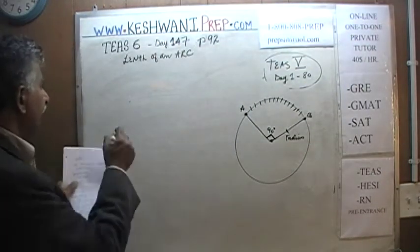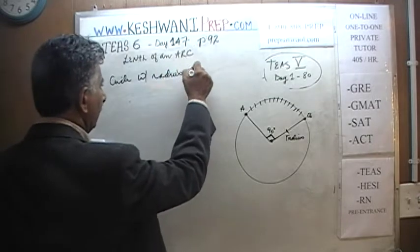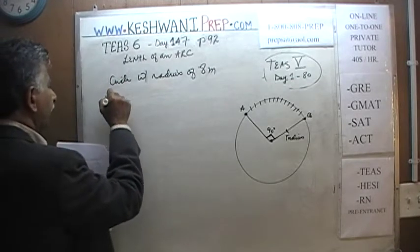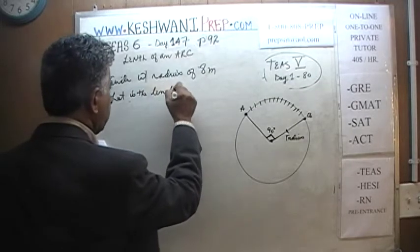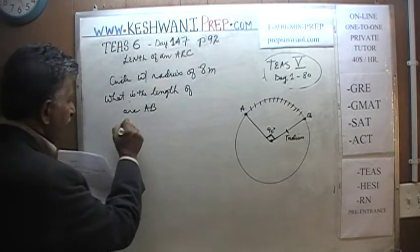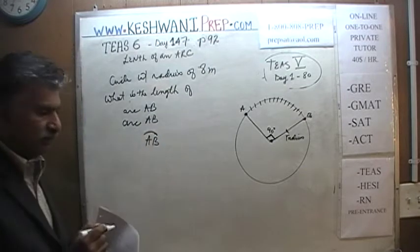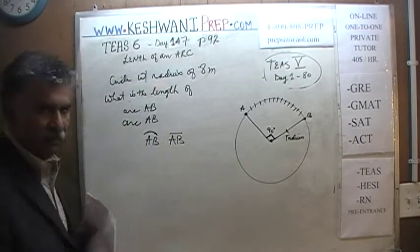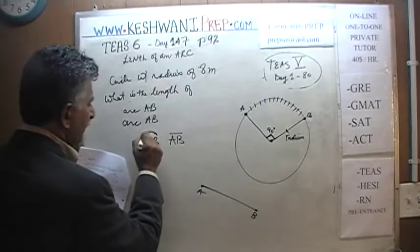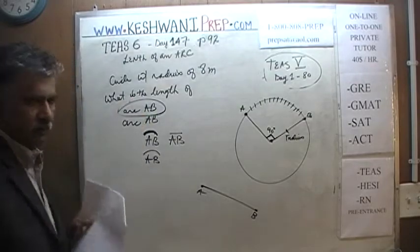The radius will be given to you. We are told that we have a circle with a radius of 8 meters. What is the length of arc AB? Now, it doesn't have to be written out like this. Sometimes it is represented with a curvature symbol on top — that is read as arc AB. This is different from segment AB, which is the straight distance from one point to the other. Because this distance follows the curve, we put a curve symbol on it and call it arc AB.